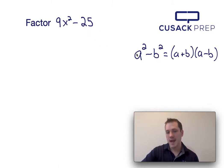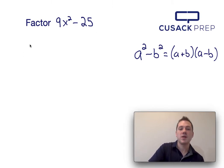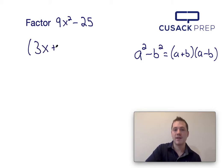So I can figure out what a is by taking the square root of 9x squared, and I can figure out what b is by taking the square root of 25. The square root of 9x squared is 3x, and the square root of 25 is 5.